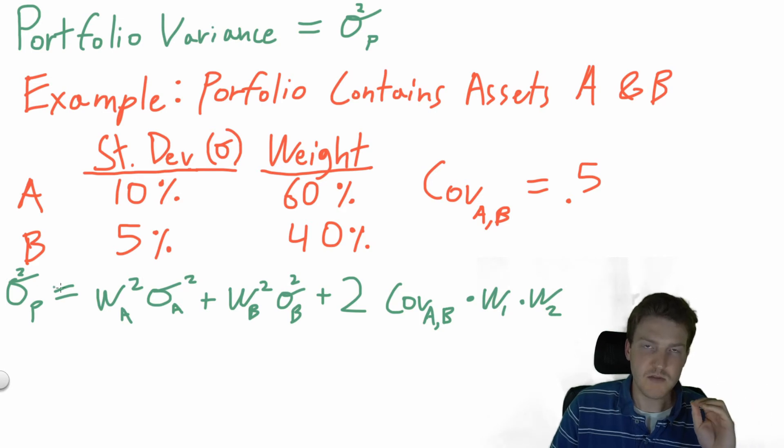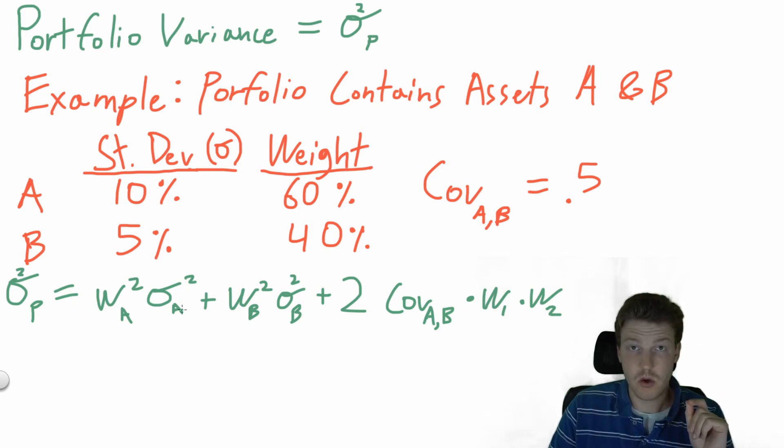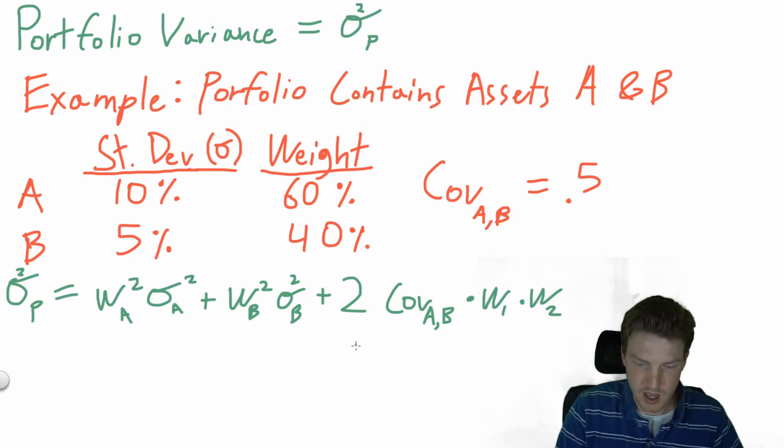The portfolio variance is equal to the weight of A squared times the standard deviation of A squared, plus the weight of B squared times the standard deviation of B squared, plus two times the covariance of A and B times the weight of asset A and the weight of asset B.